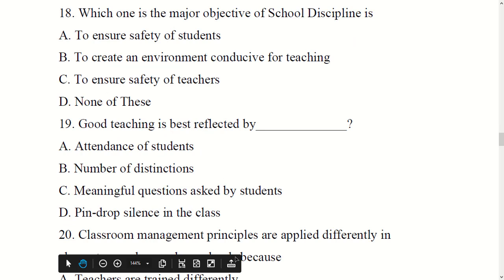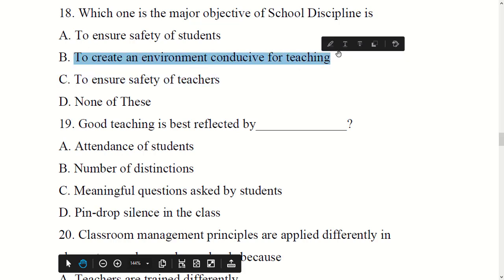Which one is the major objective of school discipline? Options: to ensure safety of students, to create an environment conducive for teaching, to ensure safety of teachers, or none of these. The right option is: to create an environment conducive for teaching.